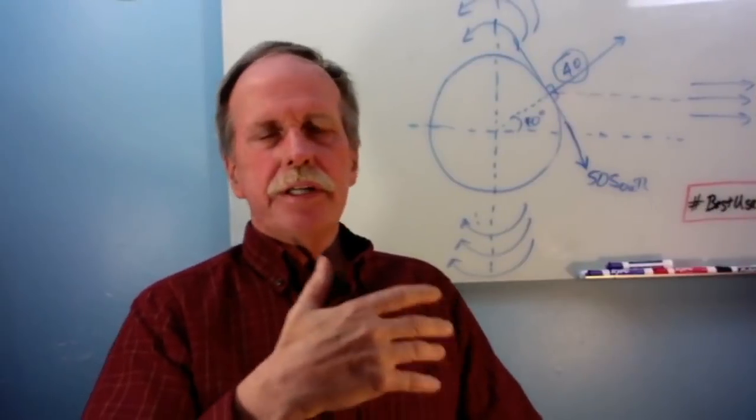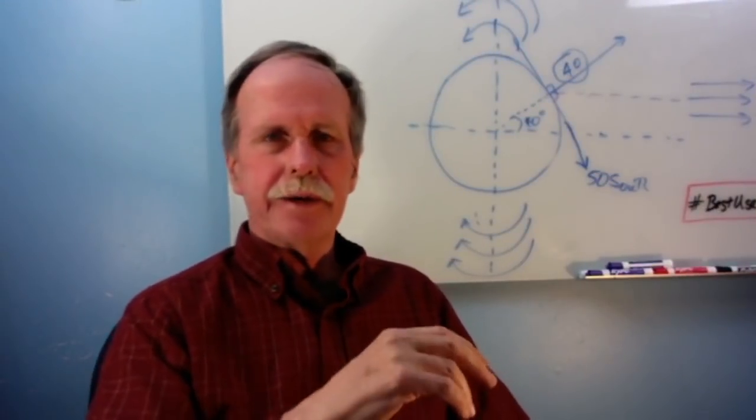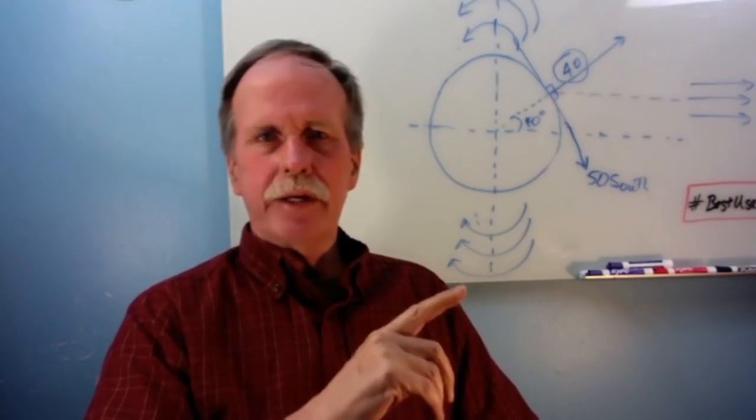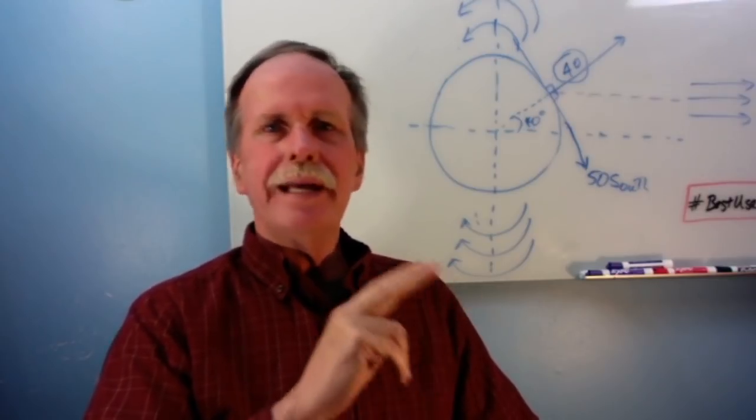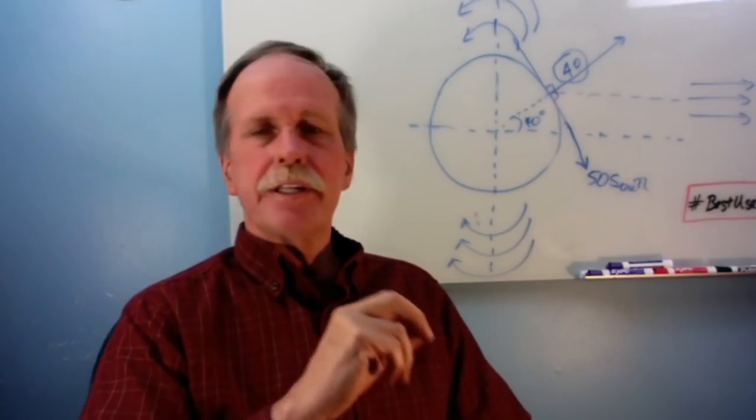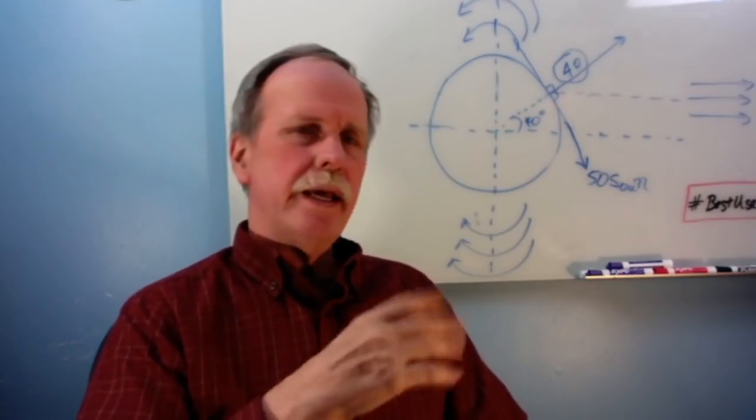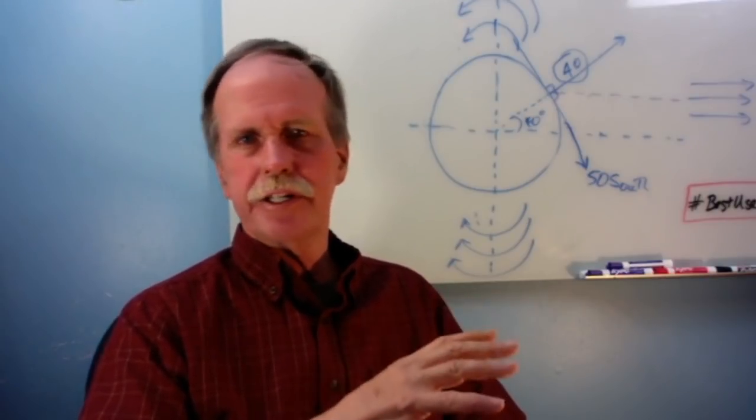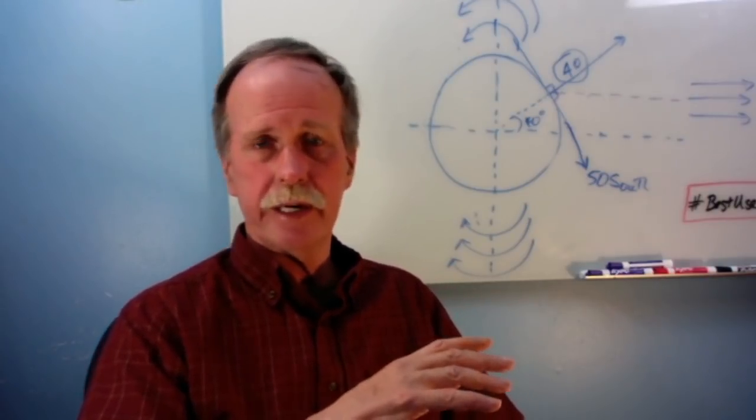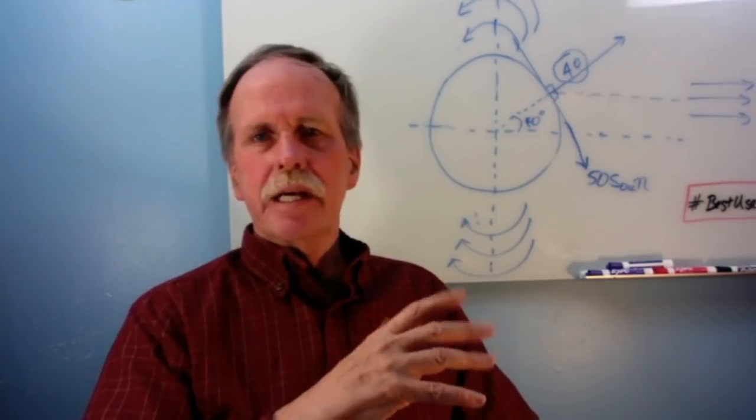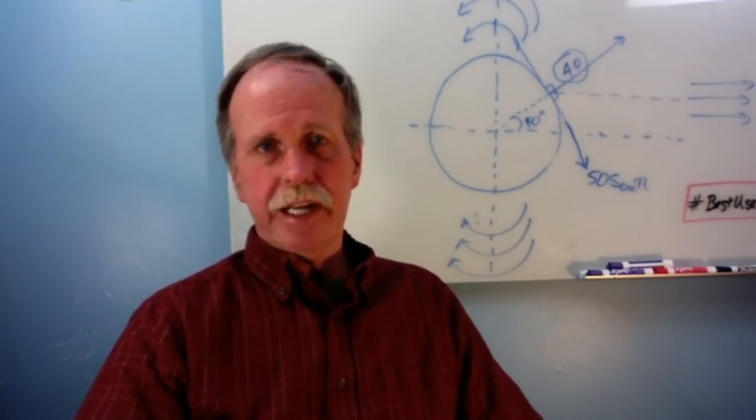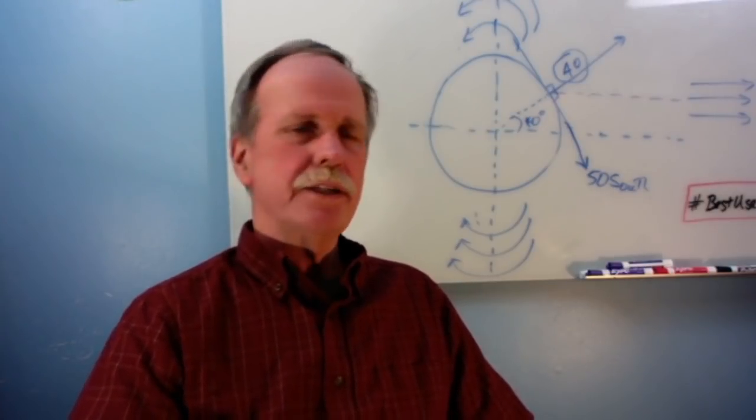If I were to describe a typical flat earther, I could do it in two words. One, ignorance. And two, arrogance. And this flat earther demonstrates both in this video. Ignorance because they have absolutely no clue as to how to understand the geometry of the problem they're trying to solve. And the arrogance comes from making a YouTube video demonstrating their misunderstanding of the basic science.